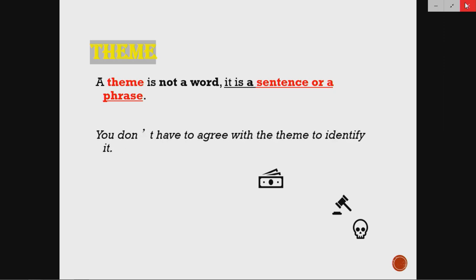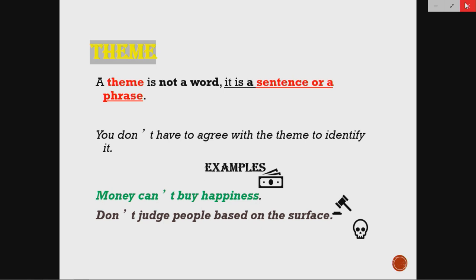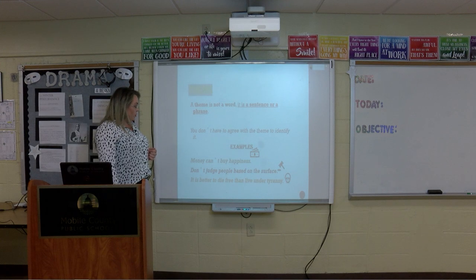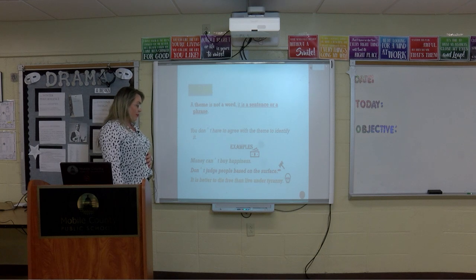You don't even have to agree with the theme in order to identify it. Let's look at a couple examples of well-known themes. One is that money can't buy happiness. Another is that you don't judge people based on the surface — some people also say don't judge a book by its cover, same concept just different wording. And another example is that it is better to die free than live under tyranny. Make sure that you have copied this down: theme will never be one word, it is always going to be a sentence or a phrase.